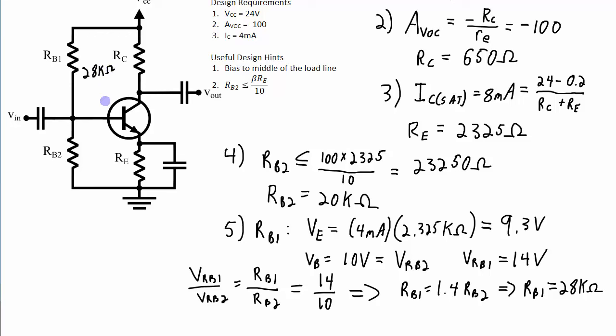So I know all of the resistor values I need now for this circuit. RB1 is 28 kilo ohms, RB2 is 20 kilo ohms, RC is 650 ohms, and RE is 2325 ohms. And that's it for the design of the circuit.